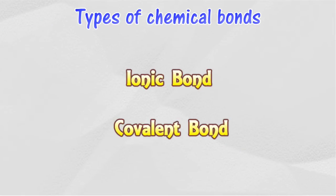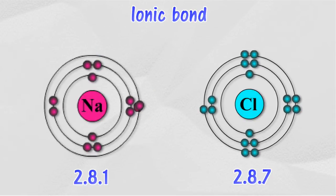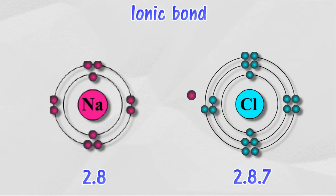Ionic bonds are formed through the transfer of electrons from the atoms of metals to atoms of non-metals.